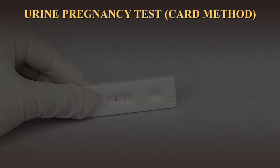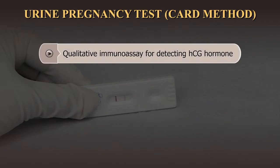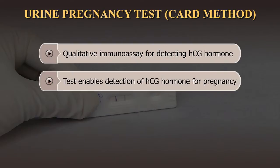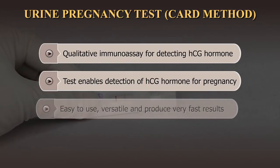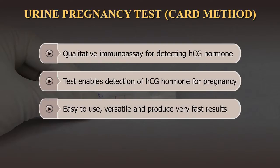The urine pregnancy test by CARD method is a qualitative immunoassay for detecting human chorionic gonadotropin, or HCG hormone, which is secreted in urine during pregnancy. It enables detection of HCG as early as on the first day of a woman's missed period, or as per manufacturer's recommended sensitivity. These tests are easy to use, versatile, and produce rapid results.